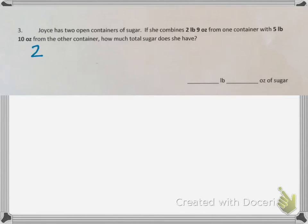This is an addition problem. We need to add 2 pounds 9 ounces plus 5 pounds 10 ounces. We will combine the like units.